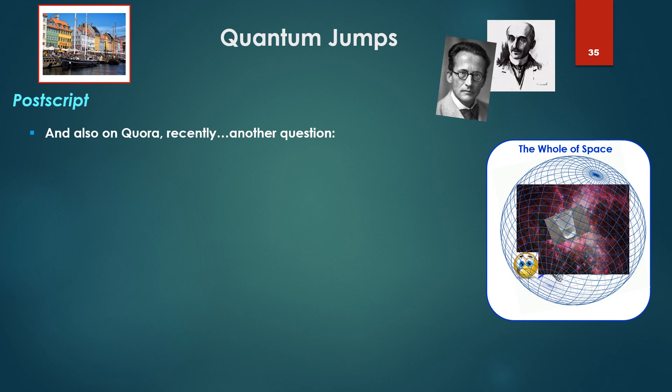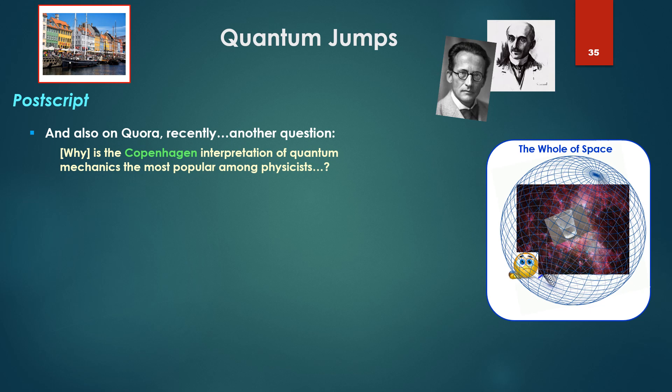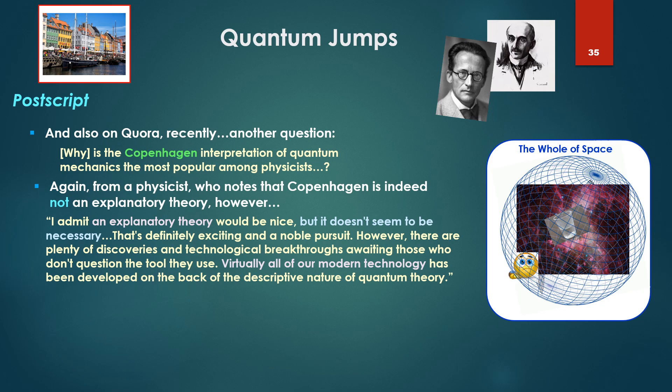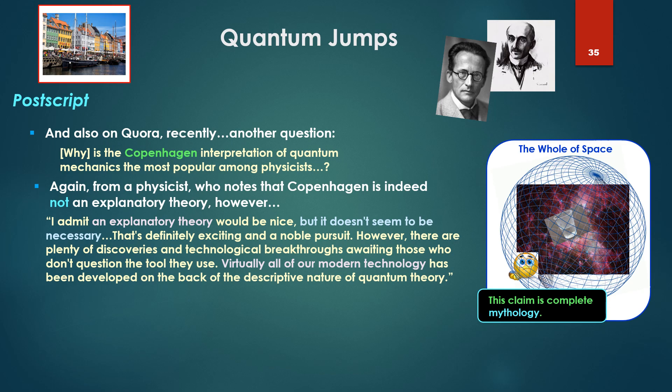Yes, as we've just seen, Schrödinger agrees, a mathematical fiction, upon which they'll build physical quantum computers, by the way, and correlated. More recently, another question: Why is the Copenhagen interpretation of quantum mechanics the most popular among physicists? Again, from a physicist who notes that the Copenhagen interpretation is indeed not an explanatory theory. However, I admit an explanatory theory would be nice, but it doesn't seem to be necessary. That's definitely an exciting and noble pursuit. However, there are plenty of discoveries and technological breakthroughs awaiting those who don't question the tool they use. Virtually all our modern technology has been developed on the back of the descriptive nature of quantum theory.